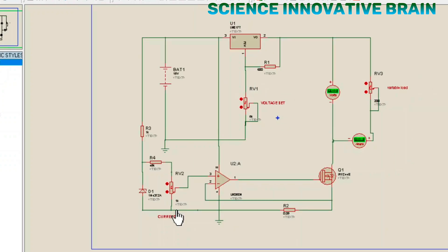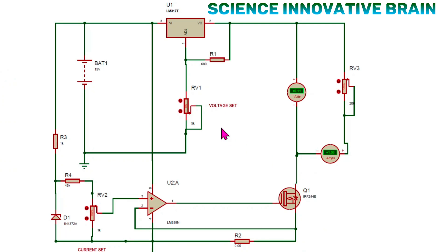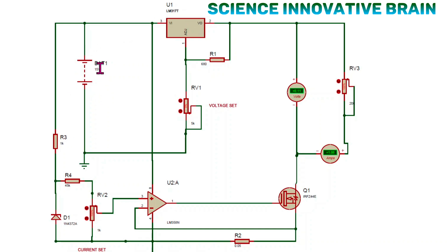In this manner, we can set the output voltage and output current with the help of these two potentiometers. Now we will discuss the circuitry. I use an LM317 adjustable voltage regulator IC, which provides a maximum output current of 1.5 ampere. A potentiometer is connected which sets the output voltage — this is the voltage set part.